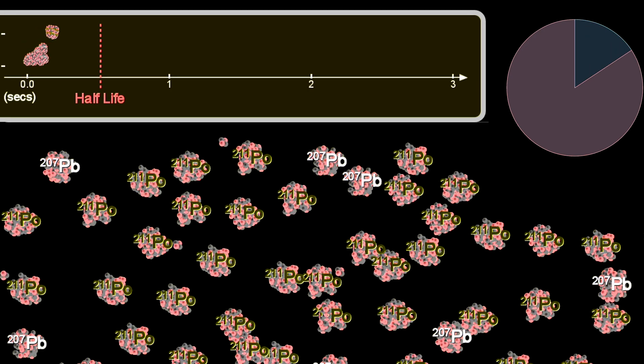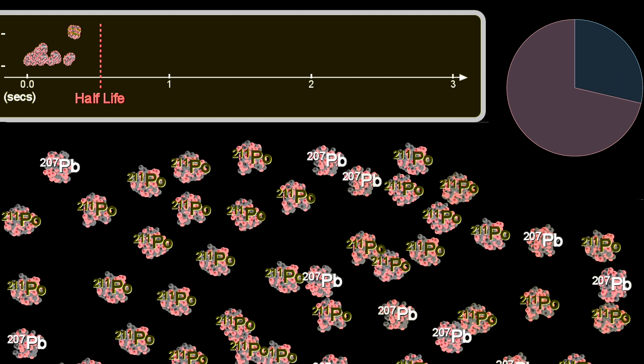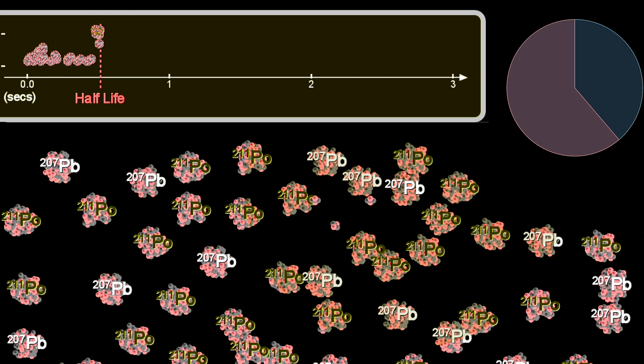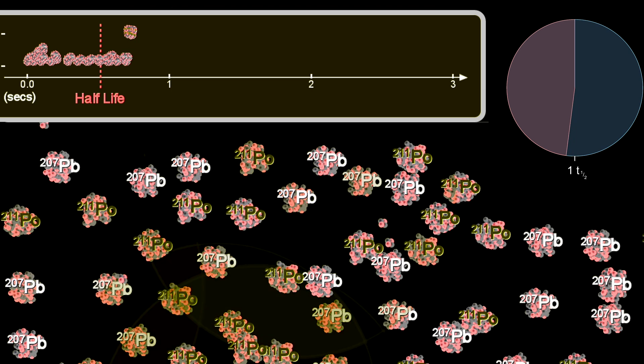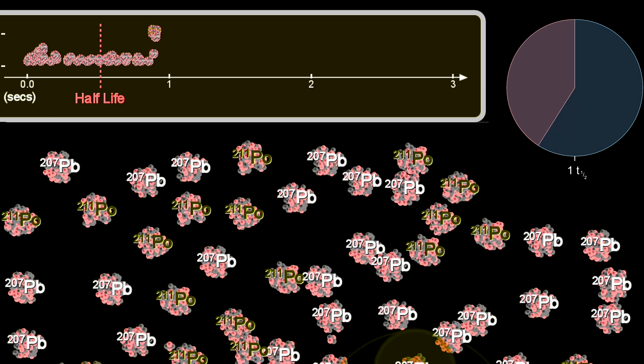if we look at the total sample, which is obviously made up of many nuclei, after a certain time, the half-life, half of the number of nuclei have transmuted into another substance.